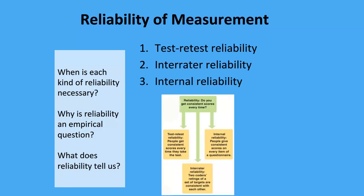A couple of questions to consider: when is each kind of reliability necessary? Test-retest and internal reliability are typically used when you have self-report data — undergraduate students or community members participating in a survey. Inter-rater reliability is typically used when researchers are coding data. Of course there are exceptions, but in general different circumstances call for different types of reliability.